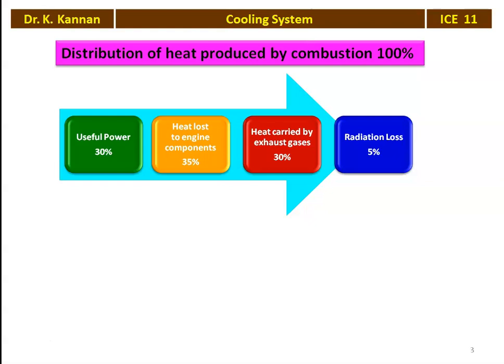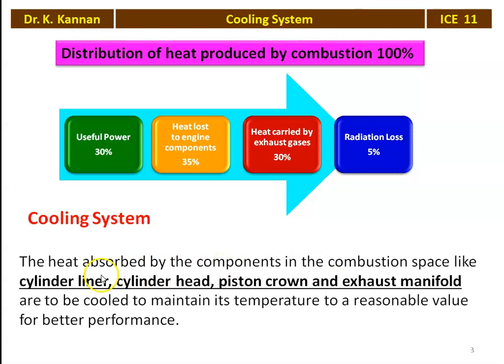So 30% is used as work, 30% is carried away by exhaust gases and radiation losses. Our concern is the 35% heat lost to the engine components — that is what must be removed by the cooling system. The heat absorbed by components in the combustion chamber space — such as the cylinder liner, cylinder head, piston crown, and exhaust manifold — must be cooled to maintain their temperature at a reasonable value for better performance.